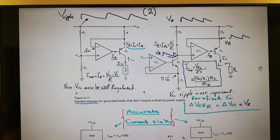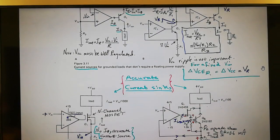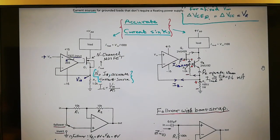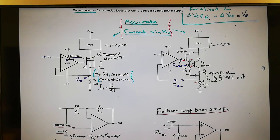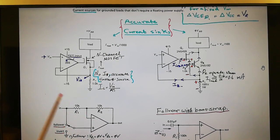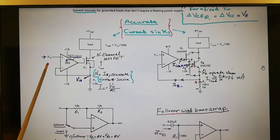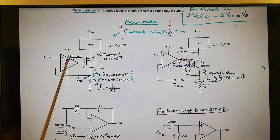Now we are talking about accurate current sinks — we call them current sinks because the load is connected to VCC, not to ground. We have the industry-standard LF355, which is a FET-input op-amp with input bias current in the nano- or pico-amp range.